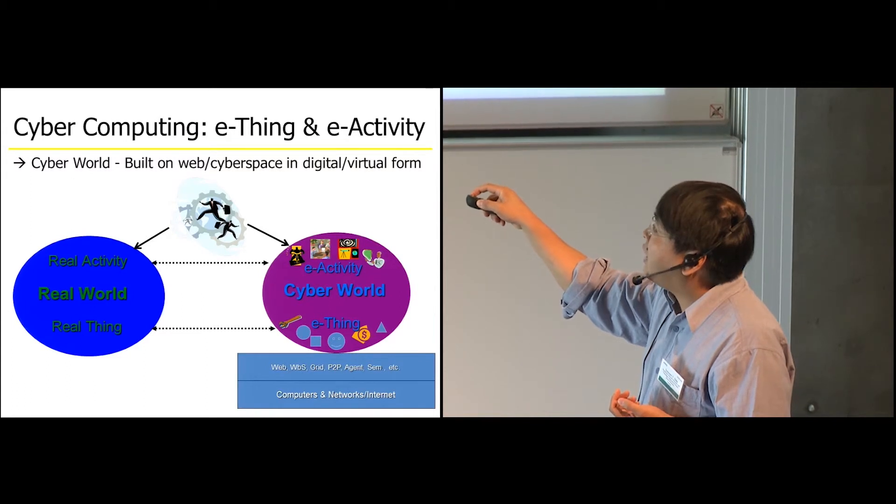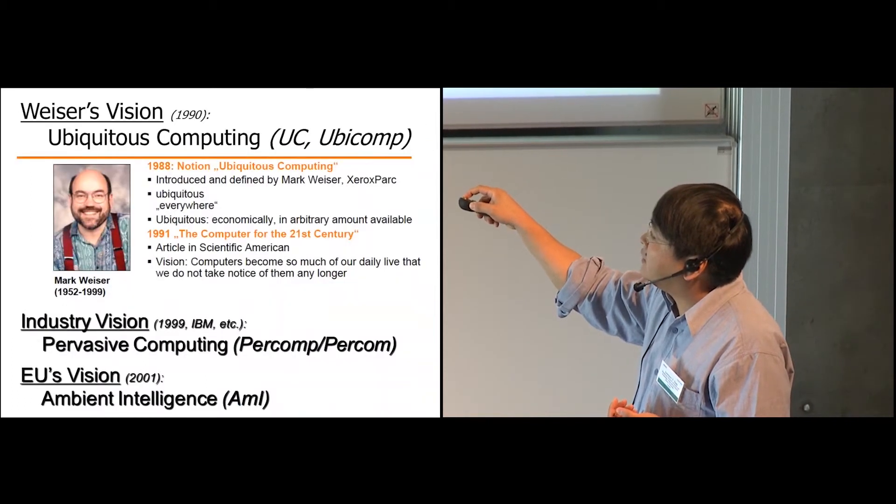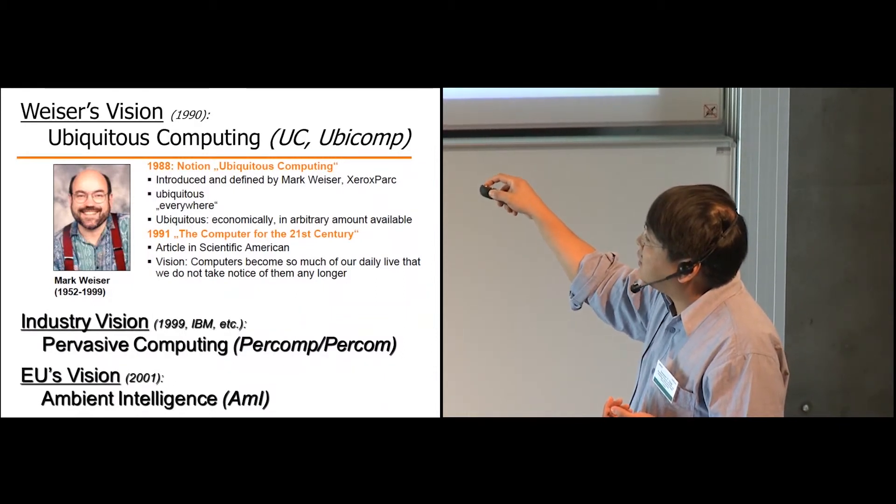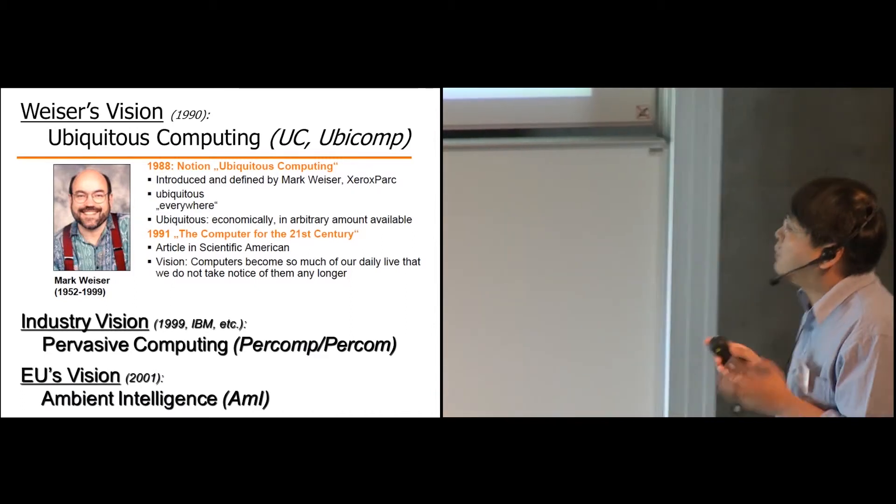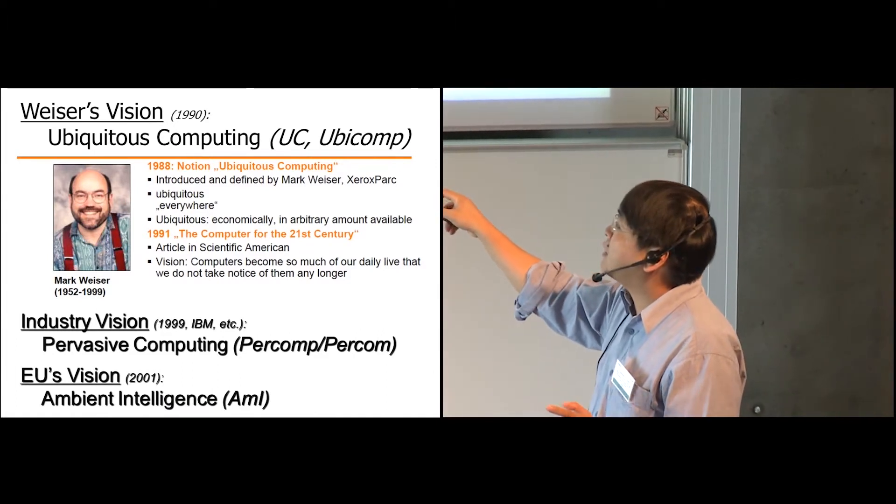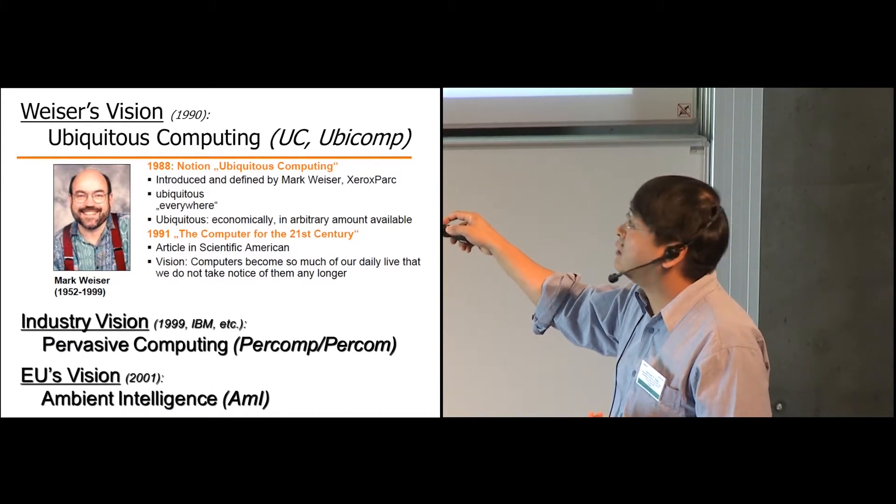And in his well-known article published in 1991 in Scientific America, the article name is called 'The Computer for 21st Century.' He proposed his vision, saying that the computer became so much of our daily life that we don't take notice of them any longer.